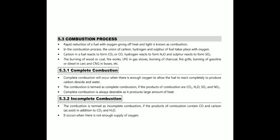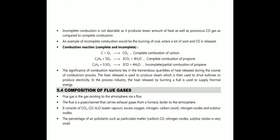Combustion processes are of two types: complete combustion and incomplete combustion. Complete combustion occurs when there is enough oxygen for the fuel to react completely, producing CO2 and water. In incomplete combustion, the products contain carbon monoxide and carbon as soot, in addition to CO2 and water. Incomplete combustion is undesirable as it produces less heat and the poisonous gas CO. For example: C + O2 → CO2 (complete); C3H8 + O2 → 3CO2 + 4H2O (complete); partial combustion of propane gives CO and water.